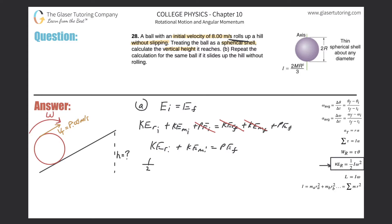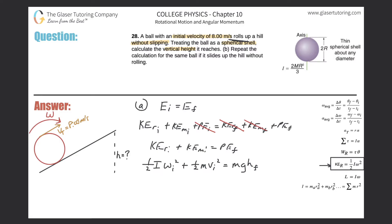Expanding each term: rotational KE is one-half times moment of inertia times angular velocity squared (initial), and translational KE is one-half times mass times initial velocity squared. These together equal mass times gravity times final height. Notice that mass appears in every term.